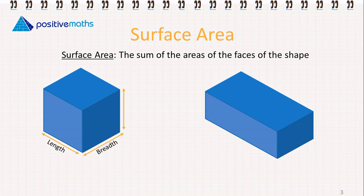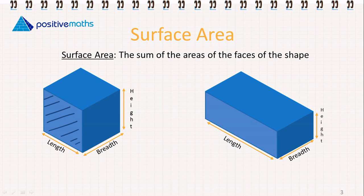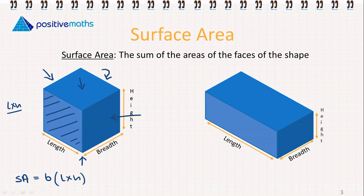Again we need to identify our length, our breadth and our height. If we take the cube, all of the faces are going to have the same area. To find the area of one face, we multiply the length by the height. We have one face here, another at the other side, a face at the top and at the bottom, and these two sides also. So we have 6 faces altogether. That means the surface area for a cube is going to be 6 times the length by the height, or 6 times the length by the breadth — it doesn't matter which face we find the area of; it's going to be 6 times the area of that face.